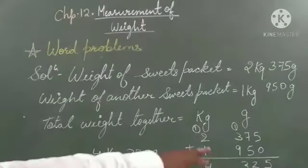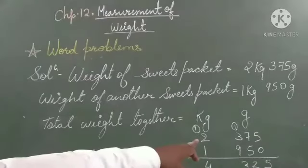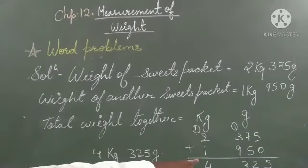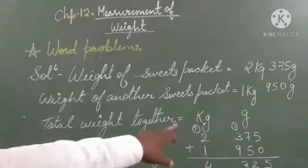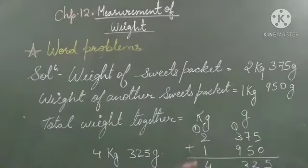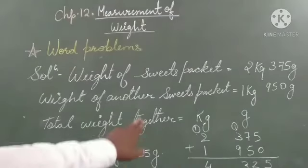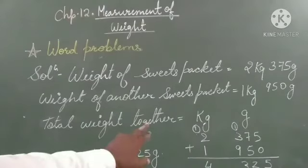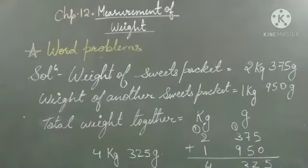5 plus 0 is equal to 5. 7 plus 5 is equal to 12. 1 carry. So 3 plus 1 is 4. 4 plus 9, that is 13. 13 ka 1 carry. 2 plus 1 is 3, and 3 plus 1 is 4. So the answer is 4 kg 325 grams.